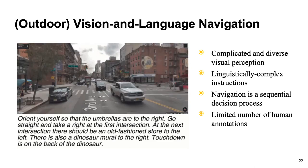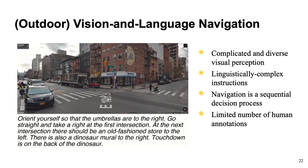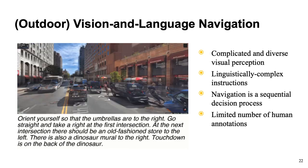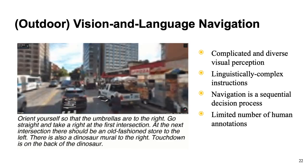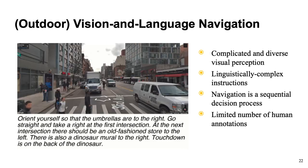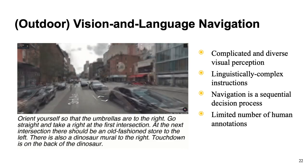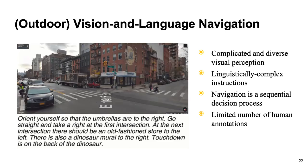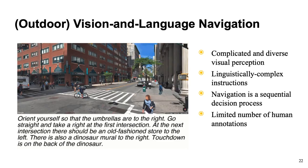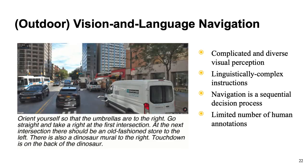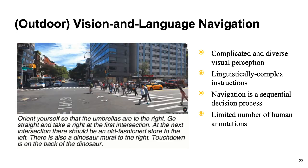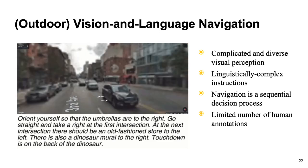The task involves giving a natural language instruction like 'orient yourself so that the umbrellas are to the right, go straight and take right at the first intersection,' with the final target on the back of a dinosaur. The agent is supposed to follow the natural language instruction and produce a sequence of actions to navigate scenes in a street view for the outdoor navigation task and reach the target location.